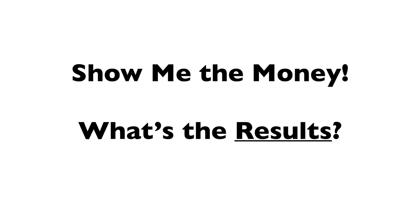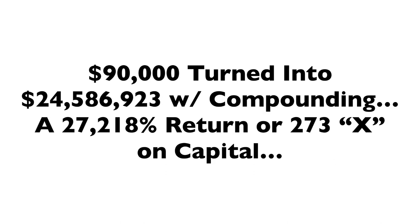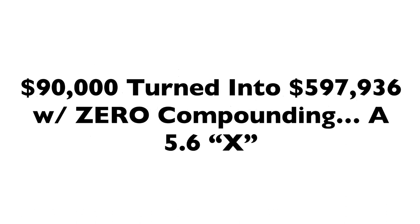So what are the results of trading an ETF system like this? If we started back in late 2006 and put ten thousand dollars into each of the nine different ETFs we track, that ninety thousand dollars would have turned into twenty-four point five million dollars with compounding — a twenty-seven thousand percent return, or 273X on your capital. Even if you just banked your profits and continued trading the original investment, that ninety thousand dollars still would have turned into nearly six hundred thousand dollars — a 5.6X return.